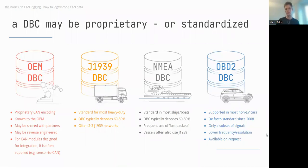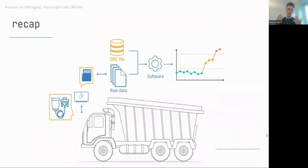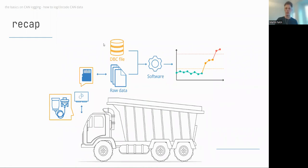To recap: CAN bus data logging involves a device to record data, the proper adapter cable to connect to your application, and collecting raw CAN bus data. If you have the DBC file, you can combine these with software tools to process the data and create signal values — human-readable data that you can visualize, analyze, and work with.